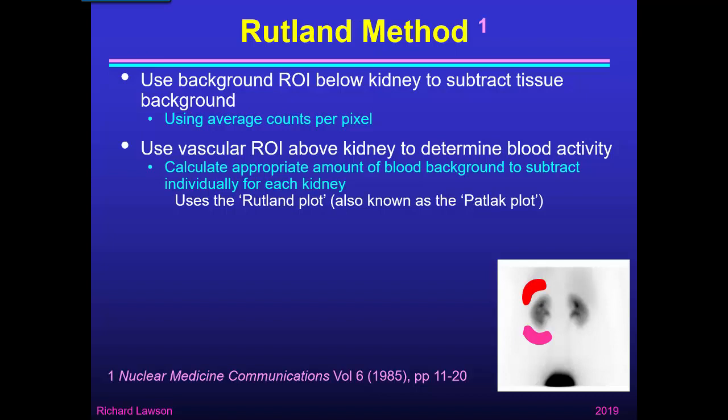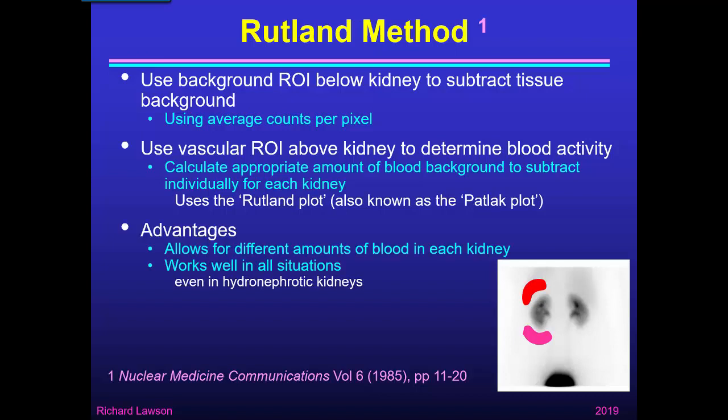Rutland published this technique for use in the kidneys, so in this context I like to call it the Rutland plot. The advantage is that it allows for different amounts of blood in each kidney, which works well in all situations, even in hydronephrotic kidneys. The disadvantage is that it's not available on all nuclear medicine systems, because some manufacturers haven't produced the software to implement this method.